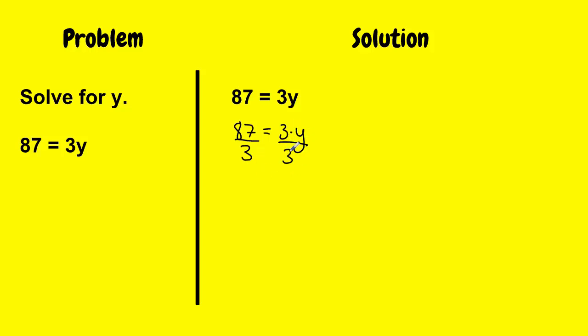3 divided by 3, if I simplify the right side of my equation, I get 1y. And on the left side, if I divide 87 by 3, I get 29. And 1y is the same thing as y equals 29.